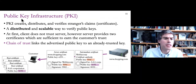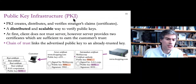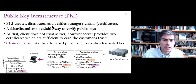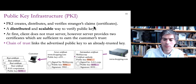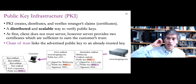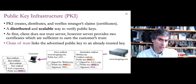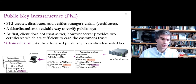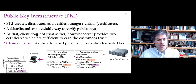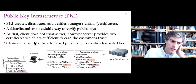We call this the Public Key Infrastructure, or PKI — this chain of trust for sharing public keys. PKI creates, distributes, and verifies strangers' claims, most importantly claims about what the public keys are for domains, so you can establish encrypted connections to particular websites. It's a distributed and scalable way to verify public keys — without any centralized action required by clients.